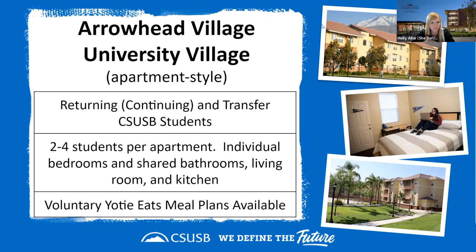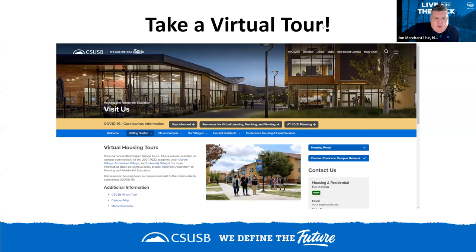You may be curious about what our halls look like. We have virtual 360 tours available on our webpage for Coyote Village, Arrowhead Village, and University Village. At this time we are not doing in-person tours — we still have some COVID-19 restrictions — but we encourage people to check out our online tours to view common spaces, bedrooms, shared areas, and laundry rooms at csusb.edu/housing.